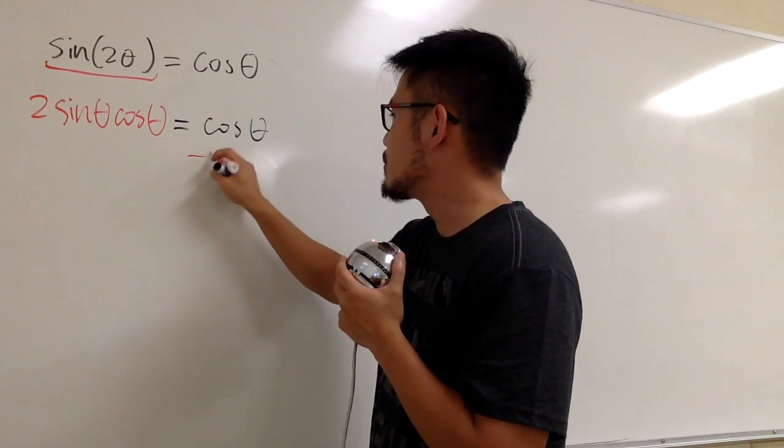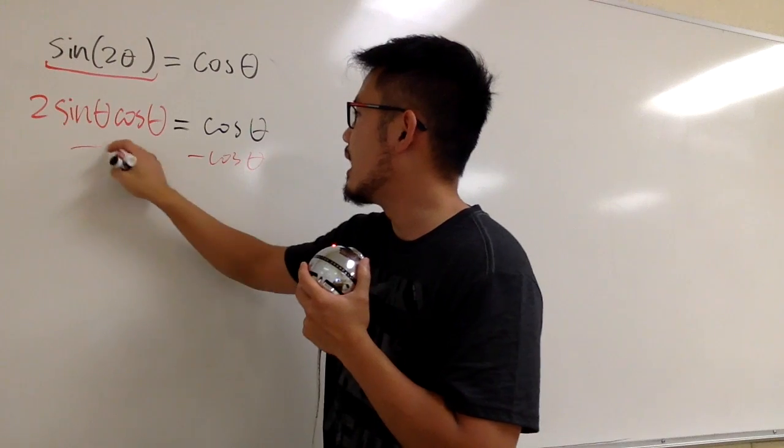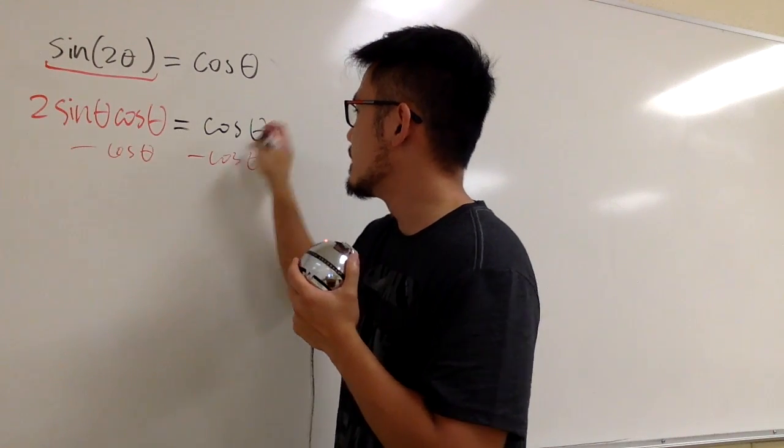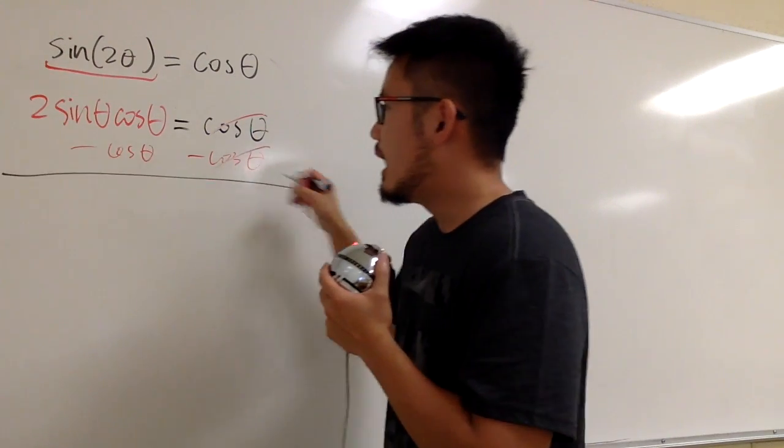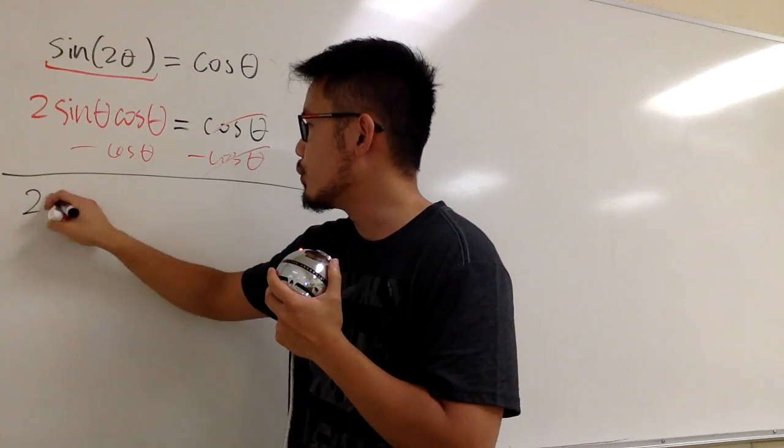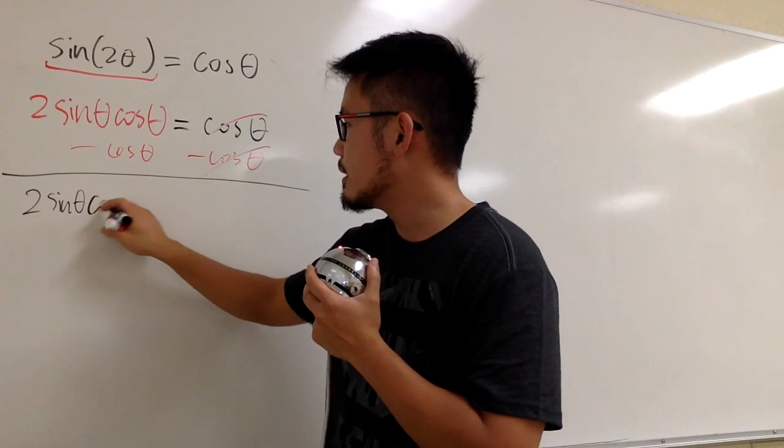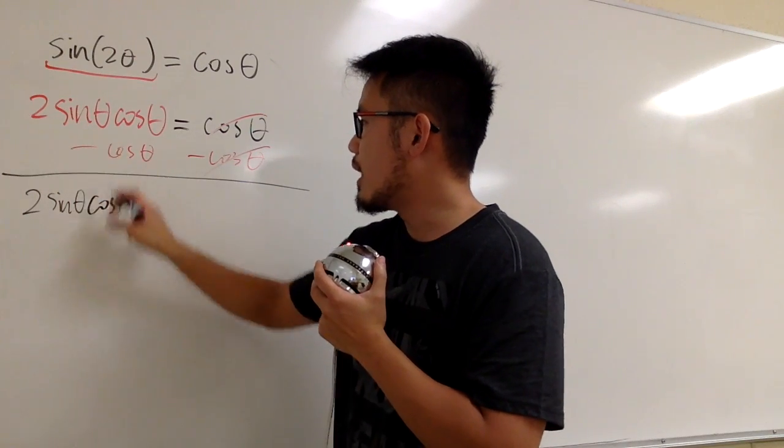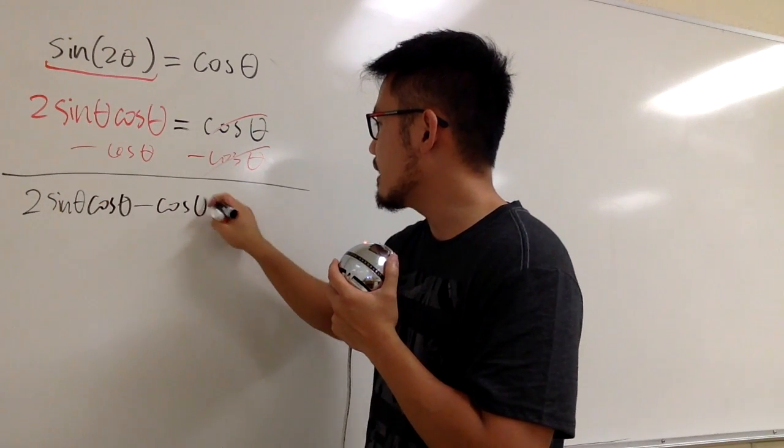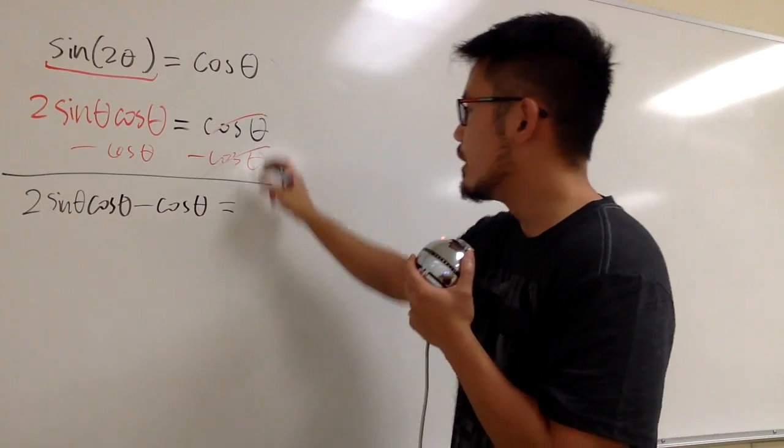So let me just subtract cosine θ on both sides. Since this and that will cancel, on the left-hand side, we will have 2 sine θ cosine θ, and then minus cosine θ, and this is equal to 0.